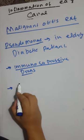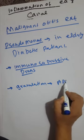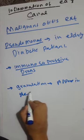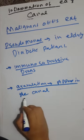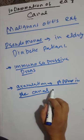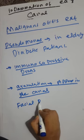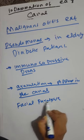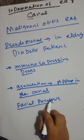The appearance of granulation tissue in the ear canal differentiates malignant otitis externa from diffuse otitis externa. There is excruciating pain and granulation tissue in the canal. Facial nerve paralysis is also common in cases of malignant otitis externa.